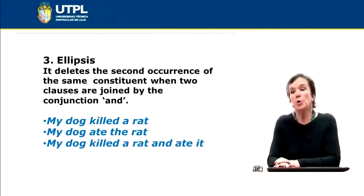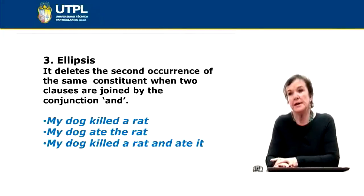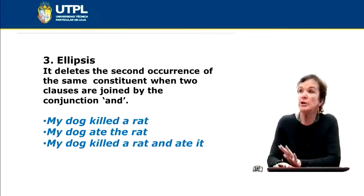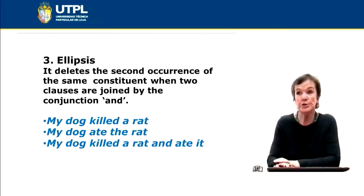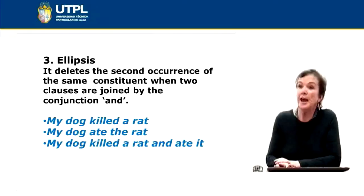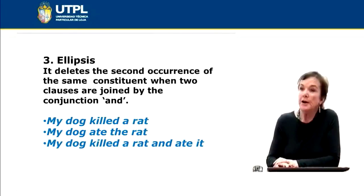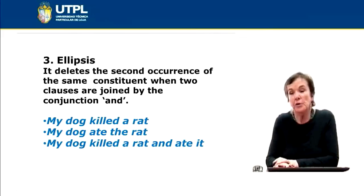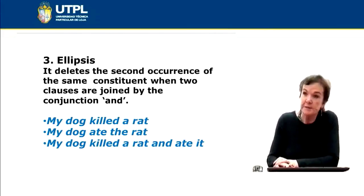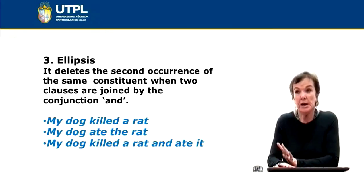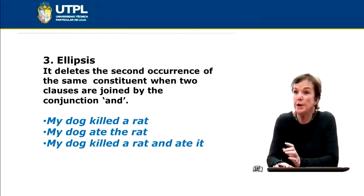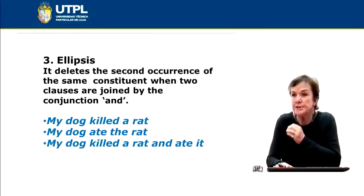A third rule to recognize that a string of words is a phrase is ellipsis. Ellipsis deletes the second occurrence of the same constituent when two clauses are joined by the conjunction 'and.' Look at the examples: 'My dog killed a rat. My dog ate the rat.' We have two clauses. We omit the noun phrase 'my dog' in the second clause and join them with 'and,' saying: 'My dog killed a rat and ate it.' This avoids the unusual repetition of the same terms.